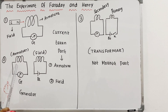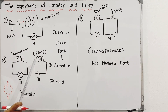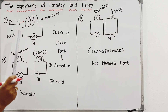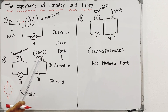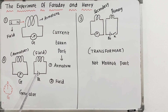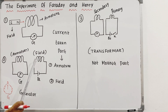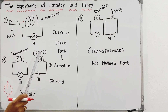This is a coil. This is the current. This is the field. We are learning that the electric current will produce a magnetic field.